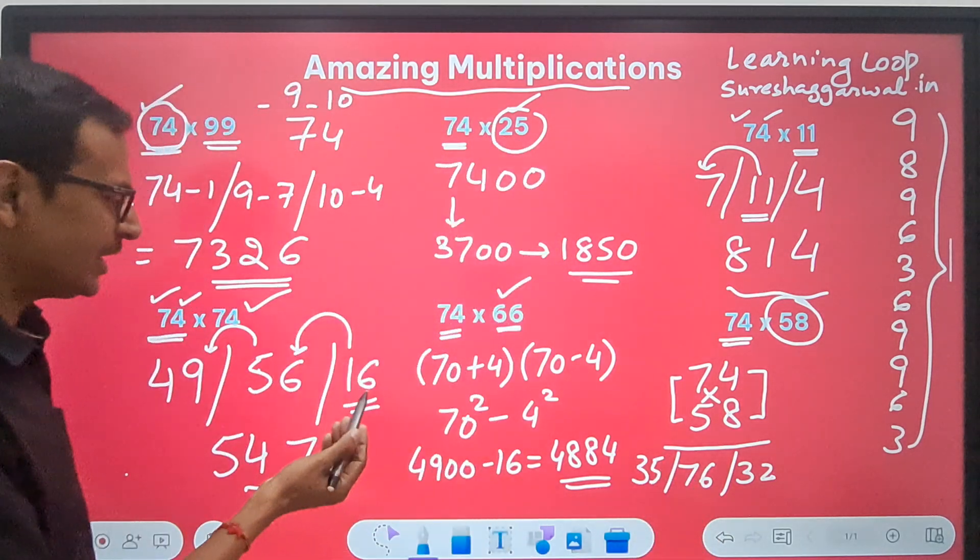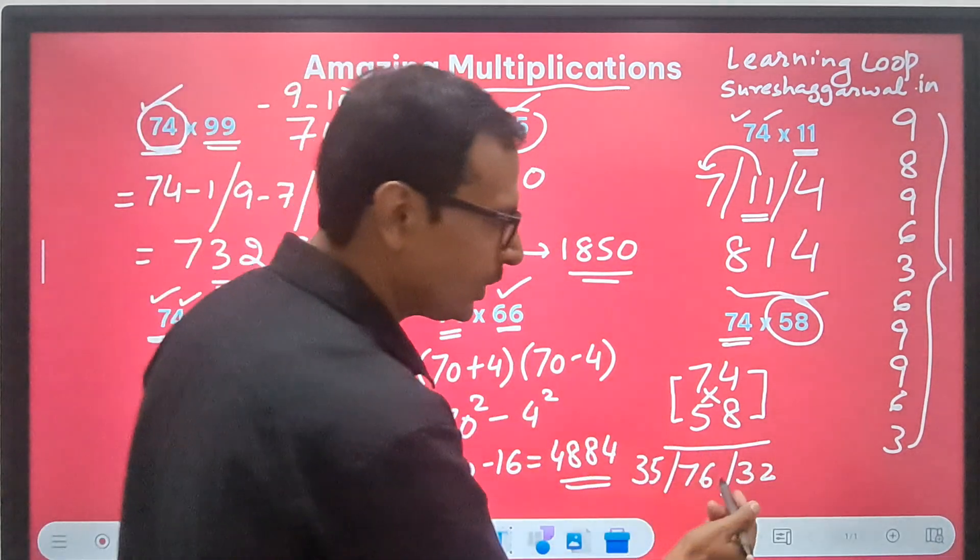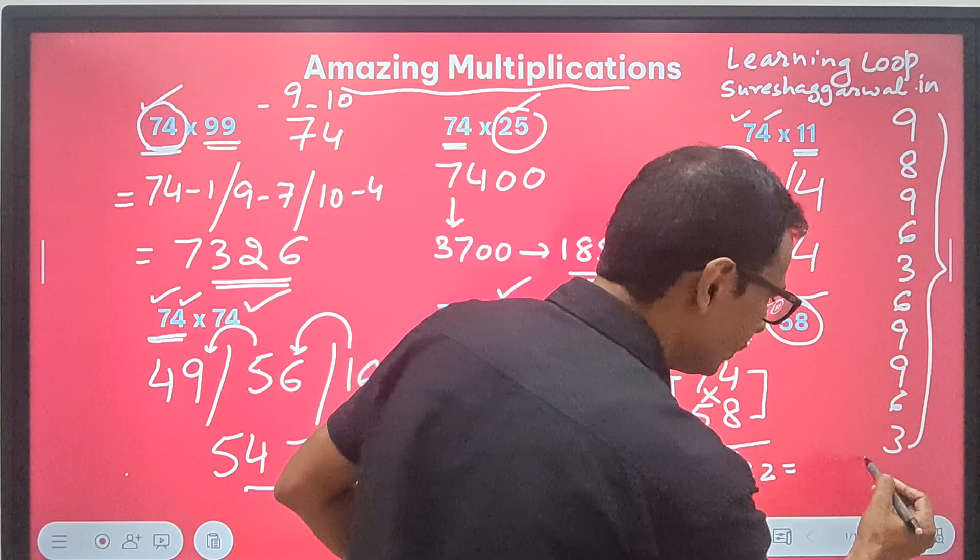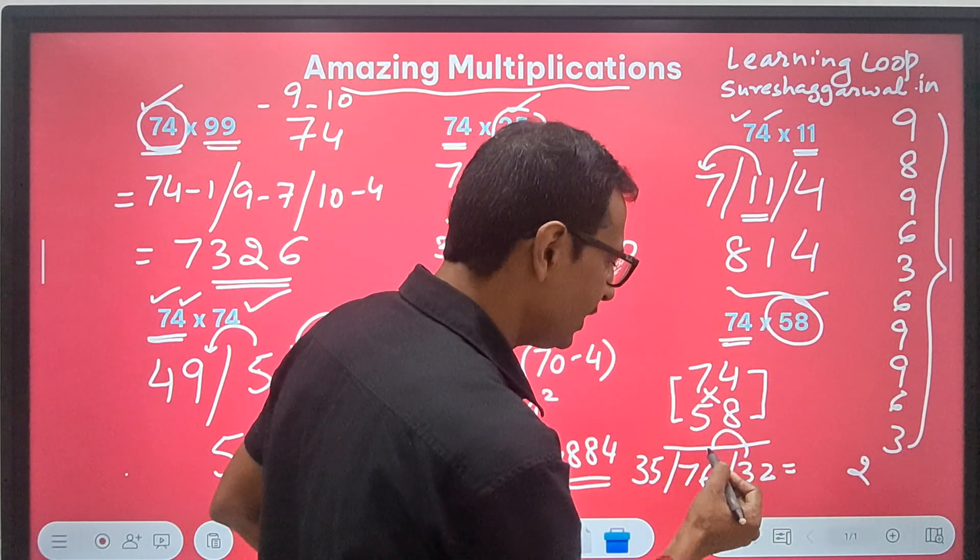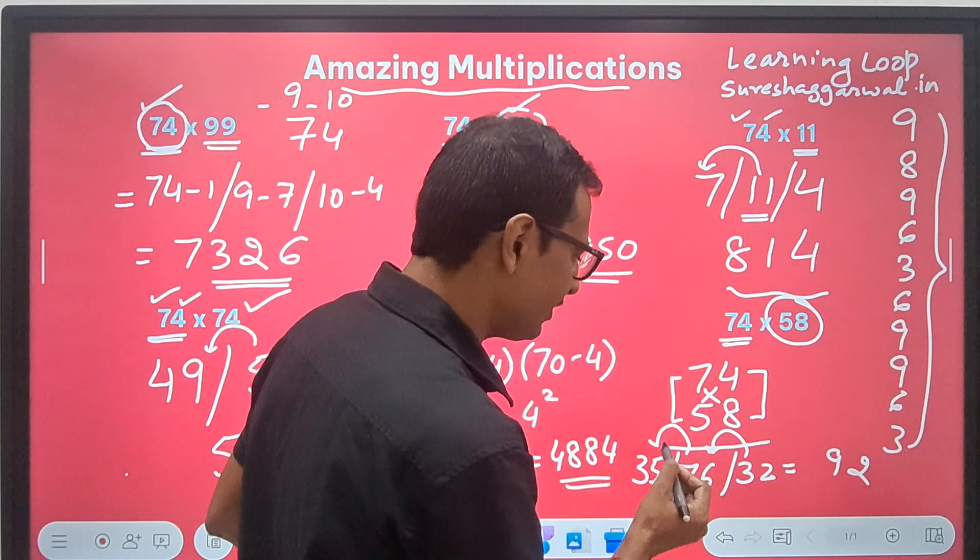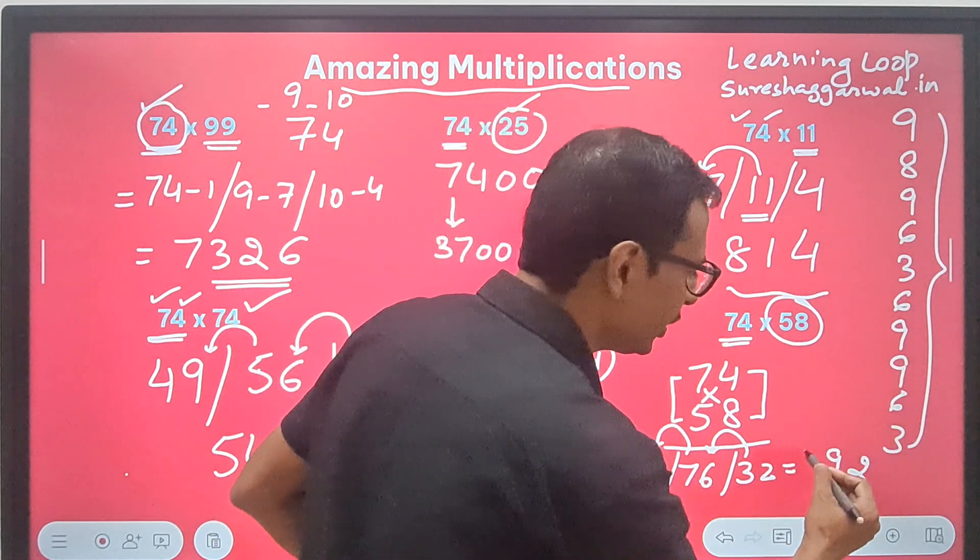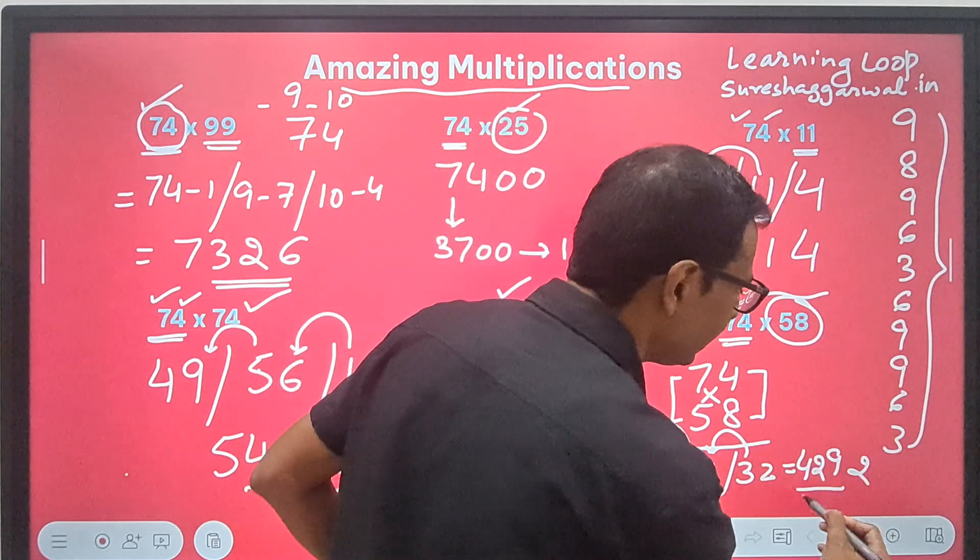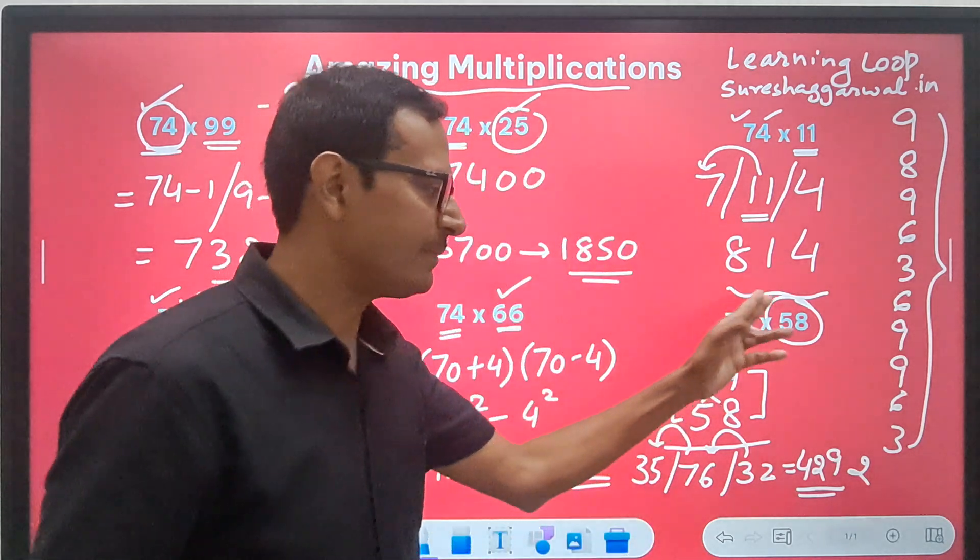Now, again, do the same thing which I did here. Retain the unit digit. So, 2. Carry forward the 3. 76 plus 3 is 79. So, 9. Carry forward the 7. 35 plus 7 is 42. And here we have the answer for 74 times 58.